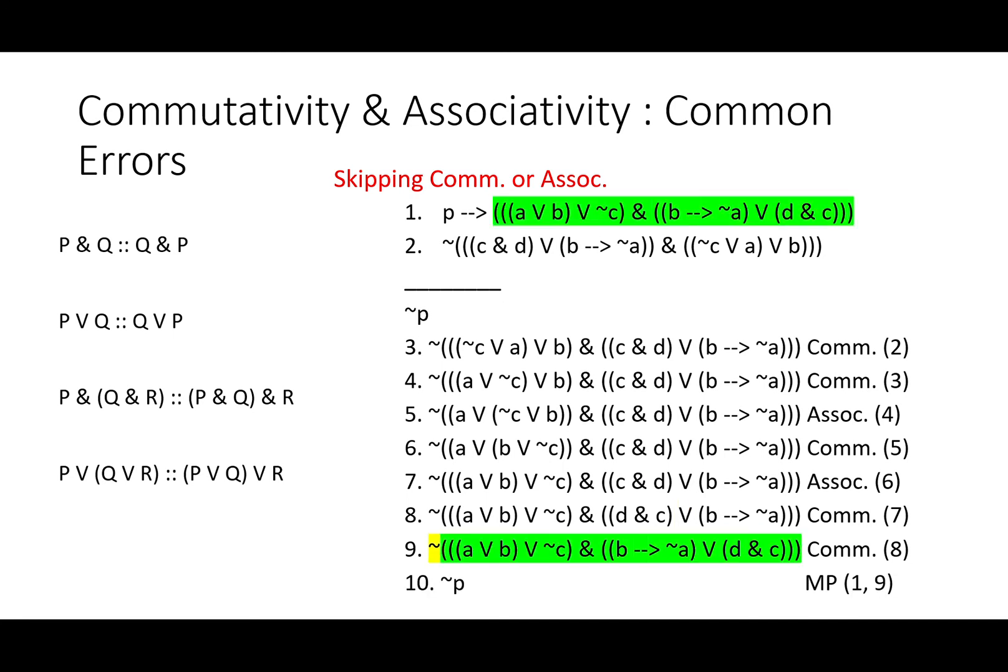Commutativity around that ampersand and then commutativity around that V makes the right side match up. Now we can do our modus ponens. It took quite a few steps, but it turns out that those things were equivalent after all. And for most of us, it wasn't at all obvious.